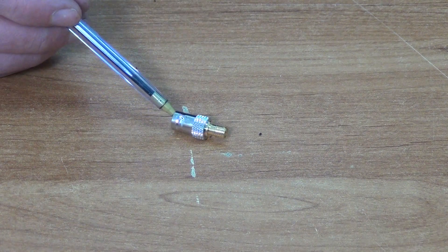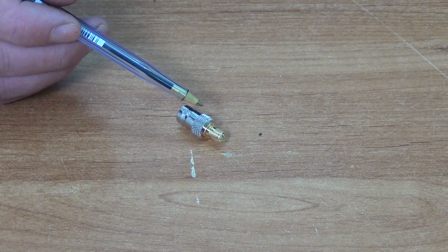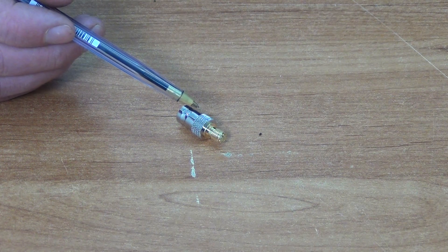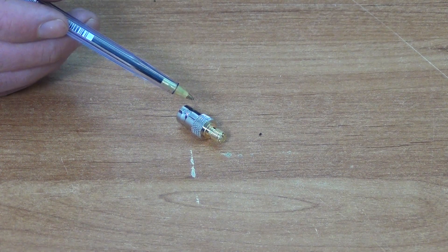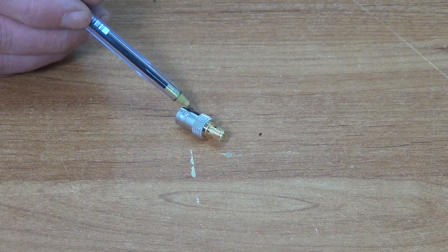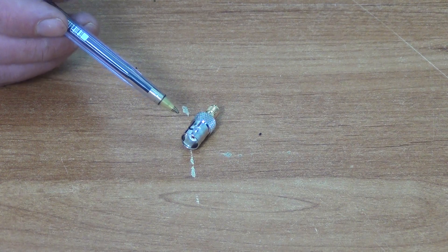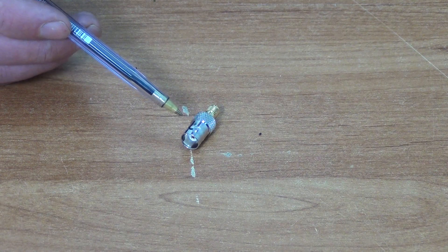If we rotate this around slightly, we can see this side here is the female SMA. This is typically used in conjunction with 4G aerials when we have SMA cables - we connect here, and on the far end here is the standard BNC type connection.